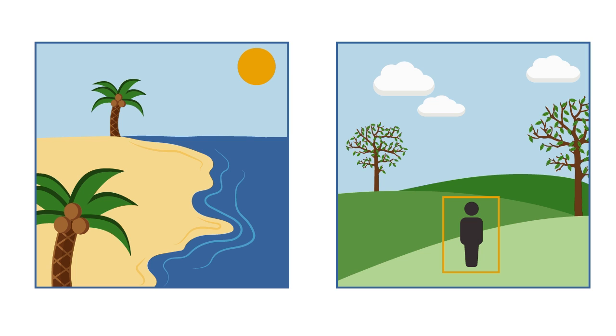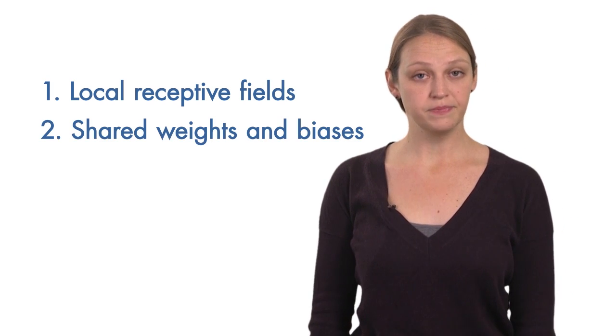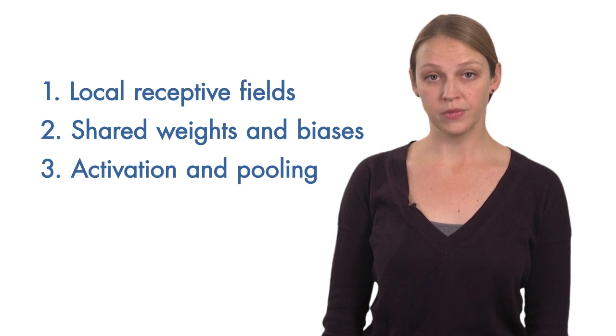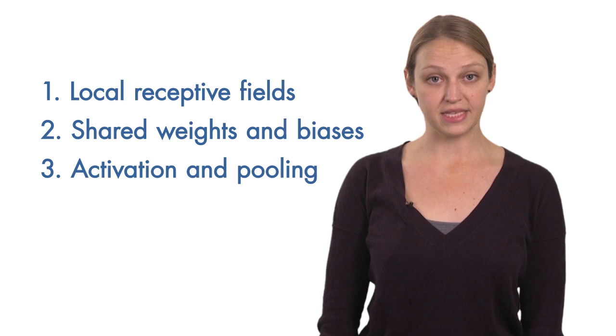In order to understand how CNNs work, we'll cover three key concepts: local receptive fields, shared weights and biases, and activation and pooling. Finally, we'll briefly discuss the three ways to train CNNs for image analysis.